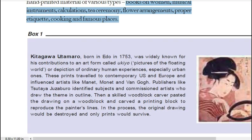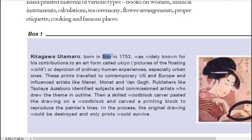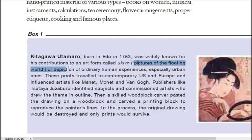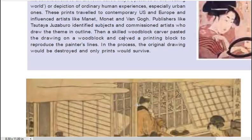Kitagawa Utamaro was born in Edo (Tokyo) and is famous for his contribution to the art form called Ukiyo — also known as 'pictures of the floating world' — starting around 1793.